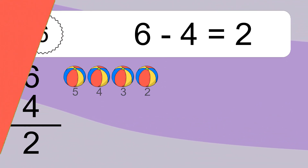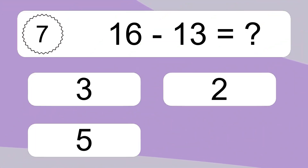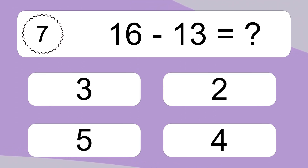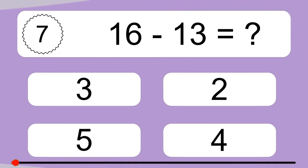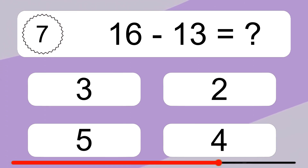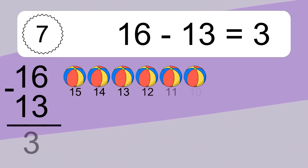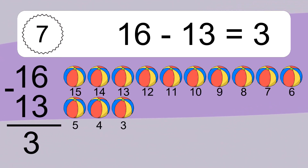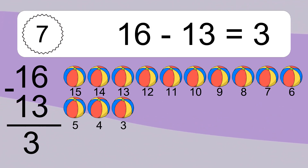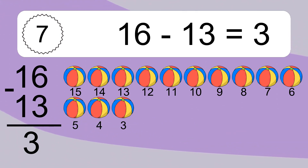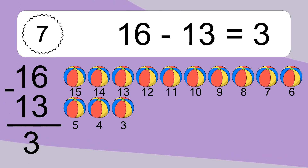16 minus 13 equals what? 16 minus 13 equals 3. Let's count it: 15, 14, 13, 12, 11, 10, 9, 8, 7, 6, 5, 4, 3.